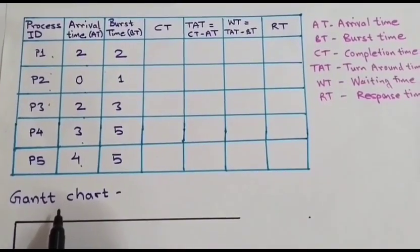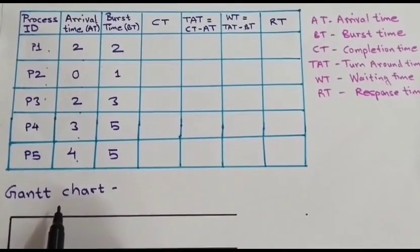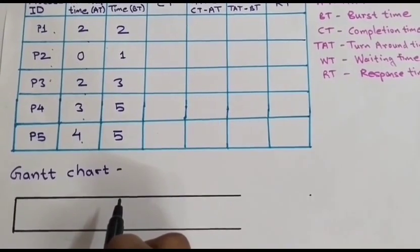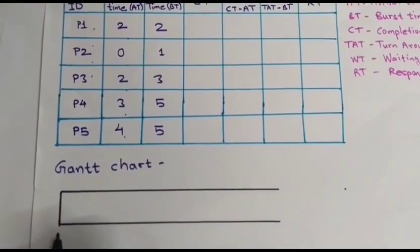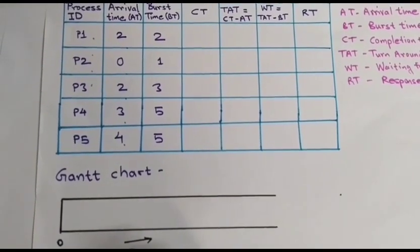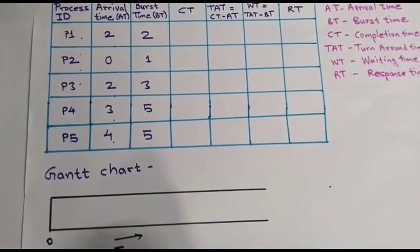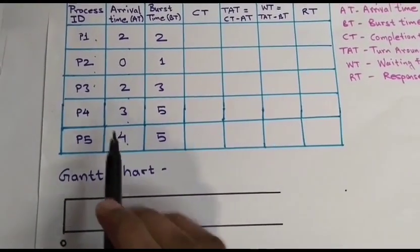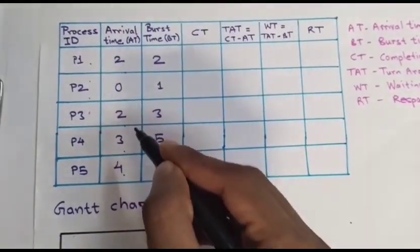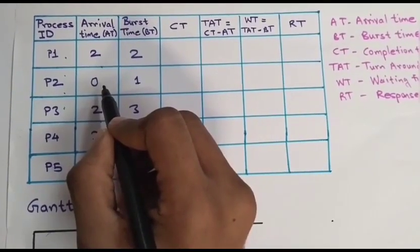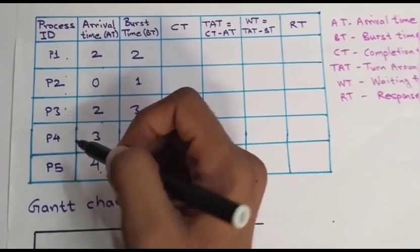To solve this kind of numerical first of all you have to draw Gantt chart. This chart will help you in solving the numerical in the easiest way. So here time starts from 0. Now at 0 first you have to check which process has arrived. Which process arrives at 0 from all this. So you can see clearly here P2 arrives at 0. So there no any other process left.